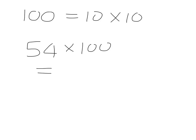And this makes multiplying by 100 really easy because 100 is just 10 times 10. So if we wanted to take 54 and multiply it by 100, we've got to take 54 and multiply it by 10 and then another 10. So we'll get 5,400.